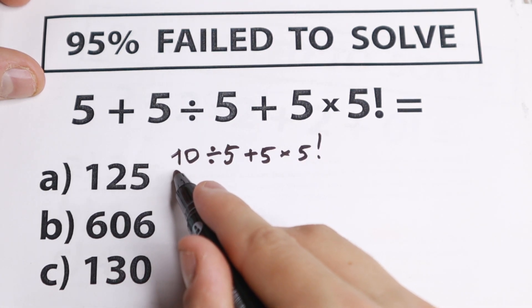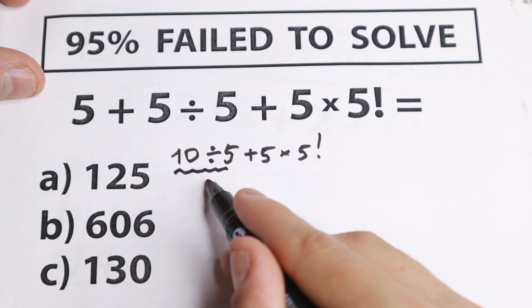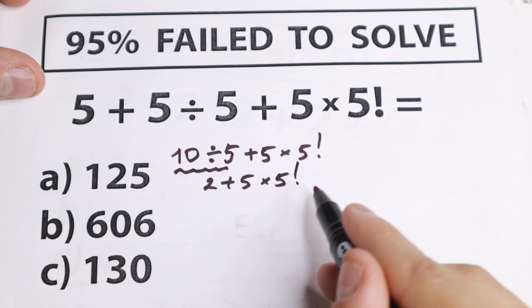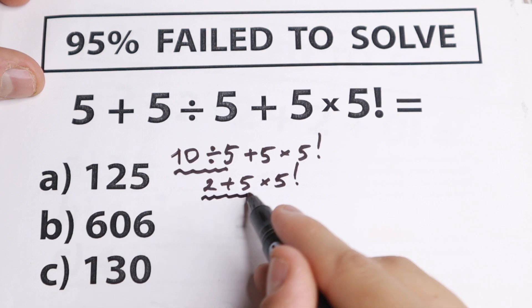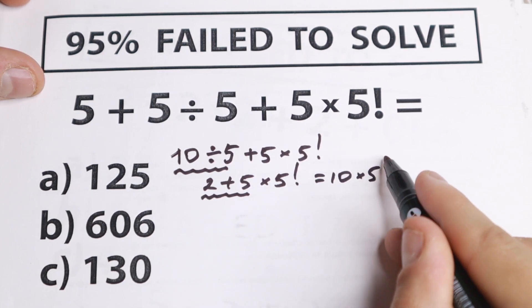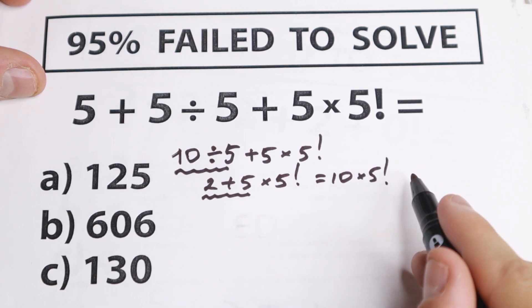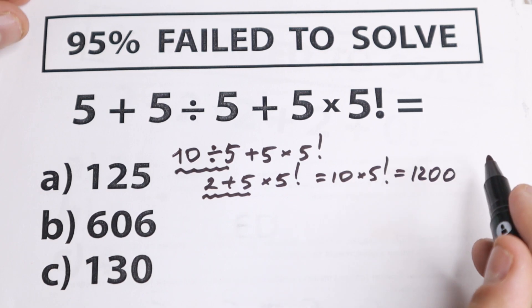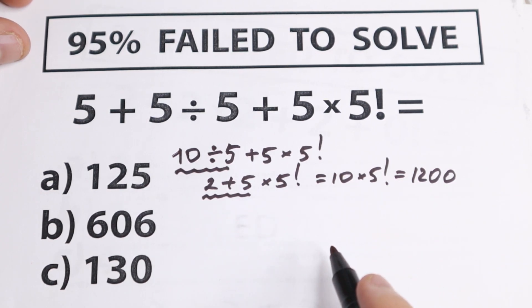Next, 10 divided by 5 we'll have 2. So 2 + 5 × 5!. Next 2 + 5, we will have 10. 10 × 5!. We know that 5! equals 120. So it looks like 1200 right here.